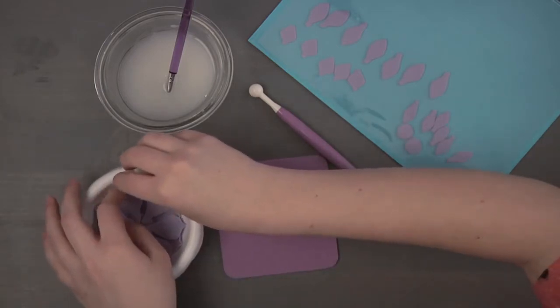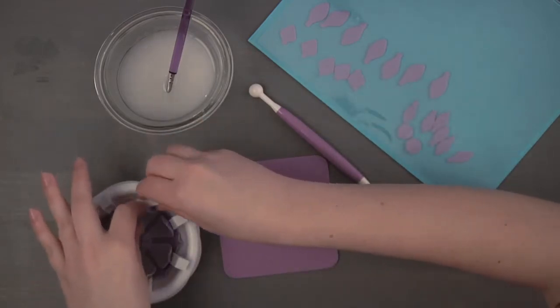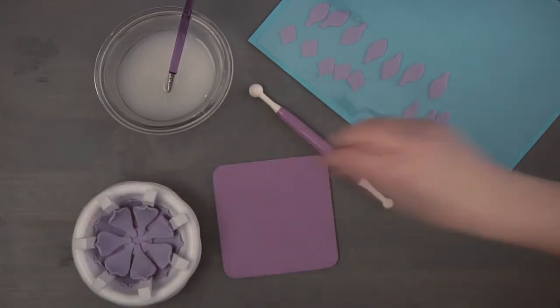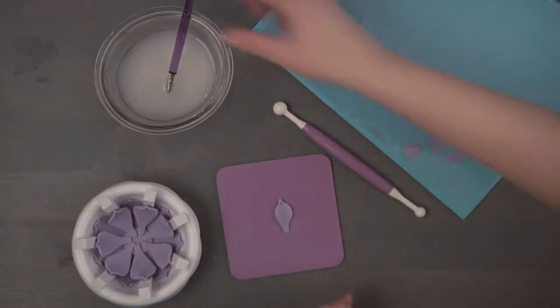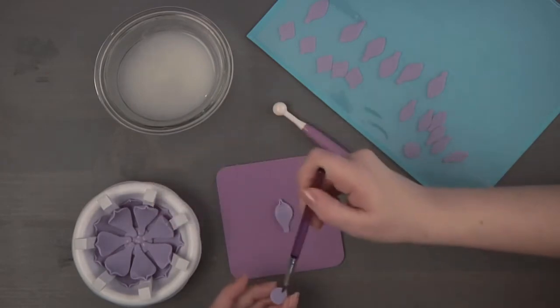If needed, use foam decorating wedges or crumpled paper napkins to support the leaves for dimension until they dry. Brush the center area of the leaves with gum glue adhesive and attach one of the smaller gum paste circles.